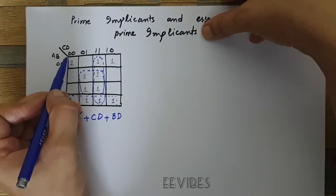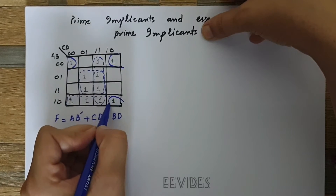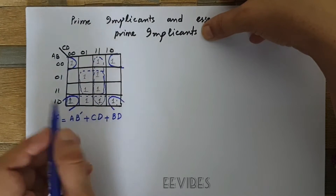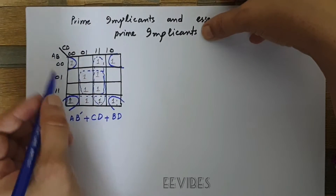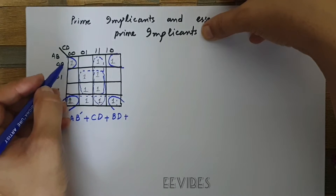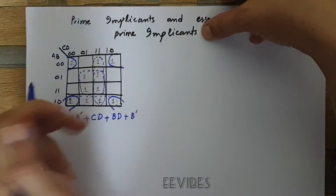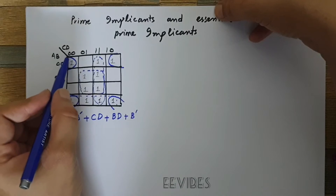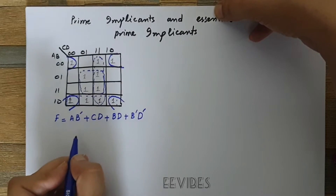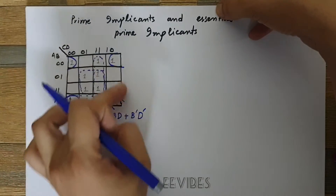The remaining ones are at the corners, so we can fold this K-map and these corners form a square. A changes from zero to one so we don't write it. B is zero so we write B complement. Moving columns, C is changing and D equals zero, so we write D complement. The term is B'D'. This completes the first possible combination.